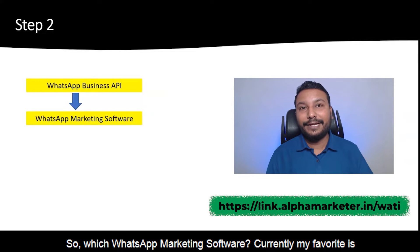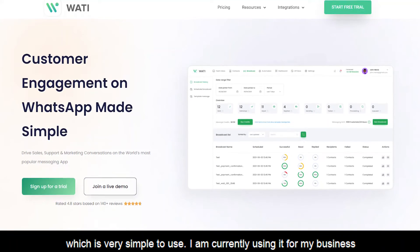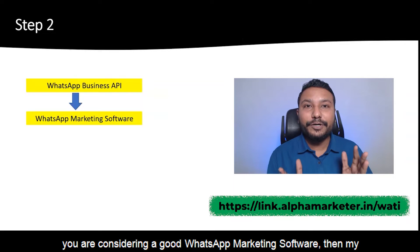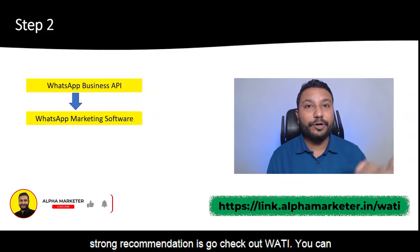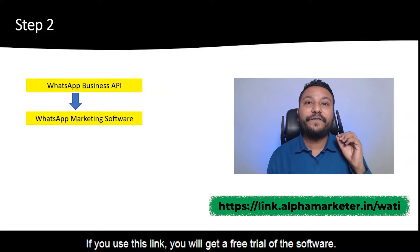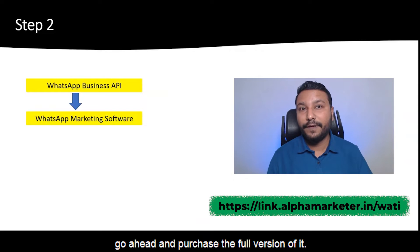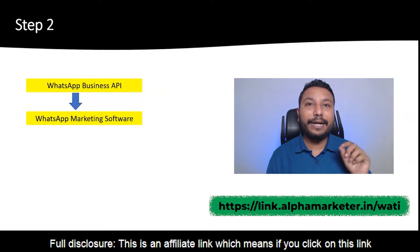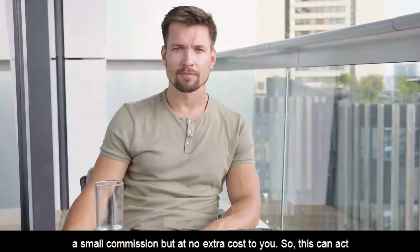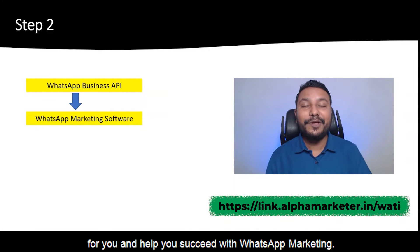Currently, my favorite WhatsApp marketing software is Wati. It's a fantastic software which is very simple to use. I am currently using it for my business and also for my clients and I'm simply loving it. If you are considering a good WhatsApp marketing software, my strong recommendation is to check out Wati. You can use my link: link.alphamarketer.in/wati. If you use this link, you will get a free trial of the software for seven days. Full disclosure — this is an affiliate link, which means if you click on this link and get a Wati account, I might get a small commission, but at no extra cost to you. This can act as a good encouragement for me to create more such videos to help you succeed with WhatsApp marketing.